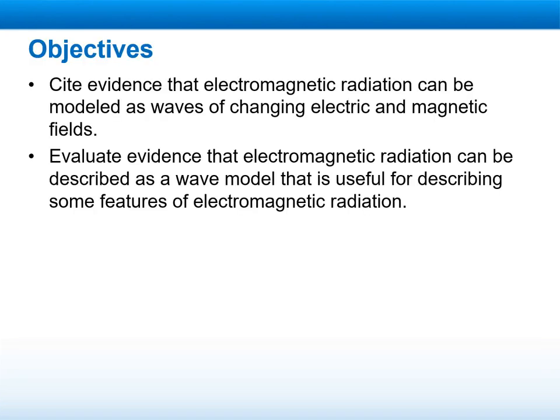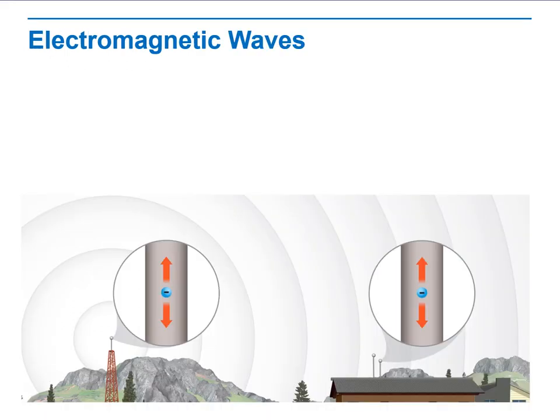The objectives of this lesson are to cite evidence that electromagnetic radiation can be modeled as waves of changing electric and magnetic fields, to evaluate evidence that electromagnetic radiation can be described as a wave model that is useful for describing some features of electromagnetic radiation.